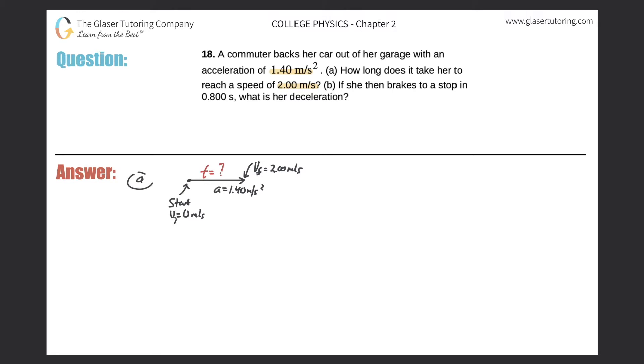And we do. The acceleration is equal to the change in the velocity divided by the change in time. So in other words, the acceleration is equal to the final velocity minus the initial velocity divided by the time it took, or the change in time.